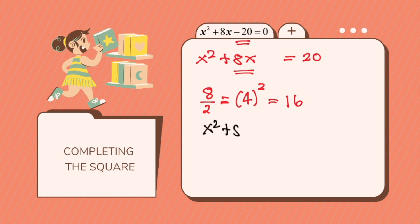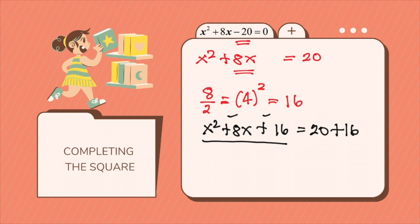So it will be x squared plus 8x plus 16 equals 20 plus 16. The reason why we need to add it on both sides is because 16 is not part of the original equation. Once you have 16 on both sides, x squared plus 8x plus 16 becomes a perfect square trinomial. You just need to check the sign — positive, positive — so you have x plus 4, in brackets, squared equals 20 plus 16, which gives you 36.